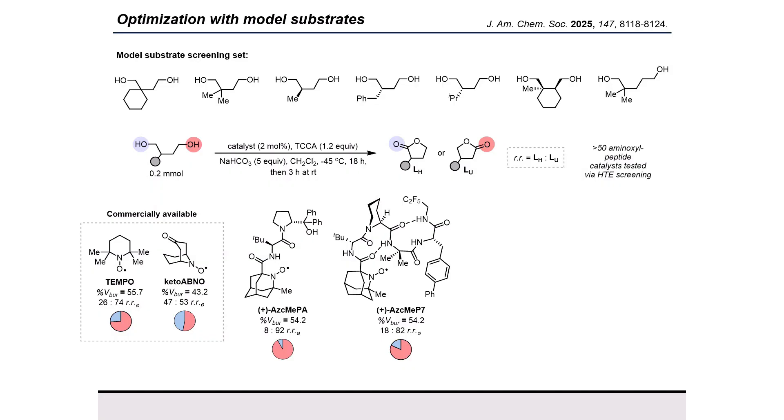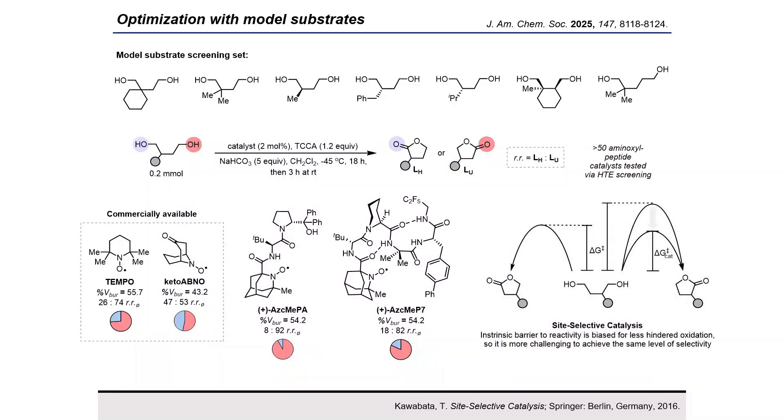As it turns out, enantioselective catalysis often does not translate well to site-selective catalysis. If we view this as a very simplified reaction coordinate diagram model, in enantioselective catalysis there is an identical barrier to the formation of either product, and you can achieve selectivity by lowering the barrier to one of the pathways. This does not translate well to site-selectivity due to the intrinsic bias for one of the sites with an unsymmetrical substrate, making it much more challenging to achieve the same level of selectivity.